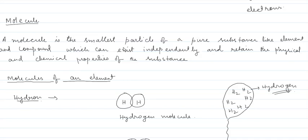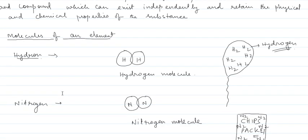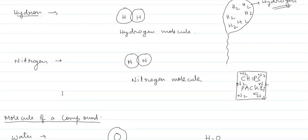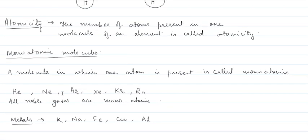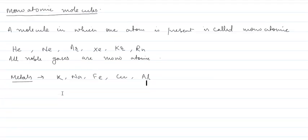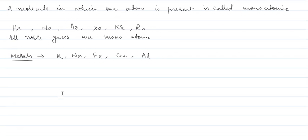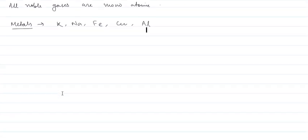Hello students. This is class 7 chemistry. In the last class we discussed about molecules such as hydrogen, nitrogen, and the molecule of water. We also discussed atomicity and monoatomic molecules. Today we will discuss diatomic molecules.